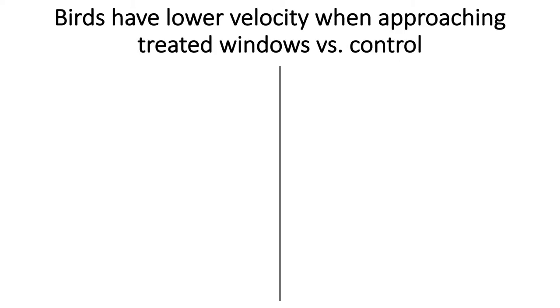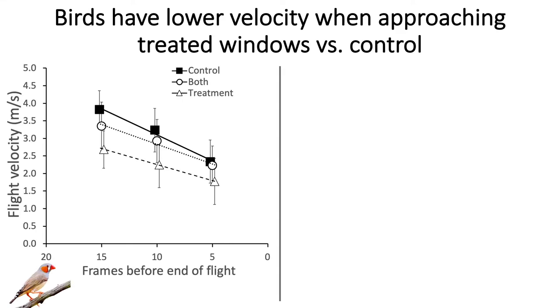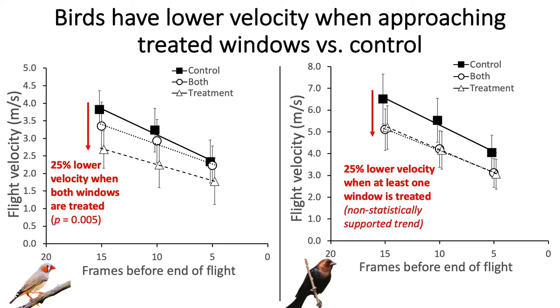Finally, we observed that birds have a lower overall velocity when approaching treated windows versus control windows. Although velocity decreased across the duration of the flight in all cases, zebra finches flew 25% more slowly overall when both windows were treated, and cowbirds flew 25% more slowly on average when at least one window was treated.